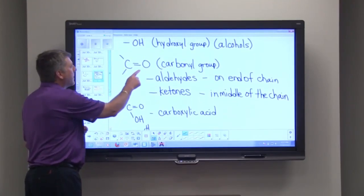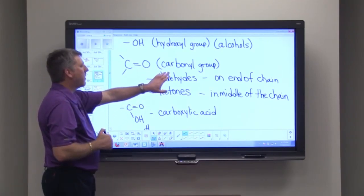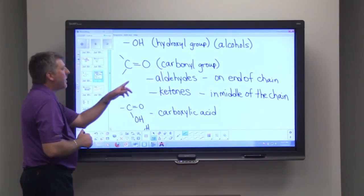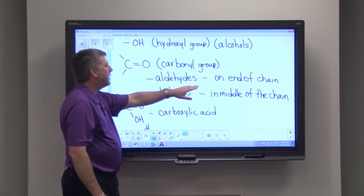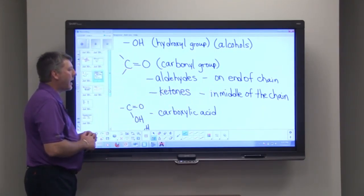Another group is a double bonded oxygen attached to a carbon, and this is called a carbonyl group. If the double bonded oxygen is at the end of a chain, then that particular substance is called an aldehyde.